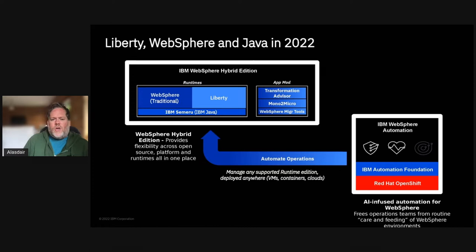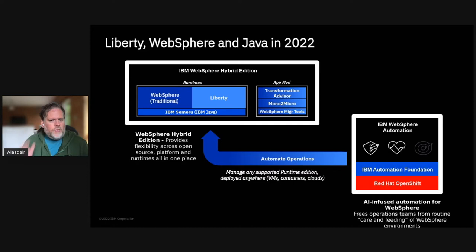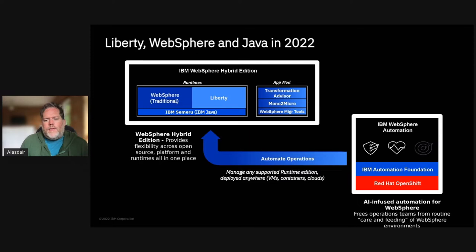This is useful for customers going from WebSphere ND to Liberty on Containers, where a base license is more appropriate than an ND one. Within hybrid edition, you can make that change without needing to talk to an IBM sales representative. In addition to the WebSphere traditional and Liberty runtimes, hybrid edition also includes a whole suite of migration tools: Transformation Advisor, which helps with modernization from traditional to Liberty including containerization, and also a tool called Mono2Micro, which helps you analyze how to take a monolith and turn it into a microservices architecture.